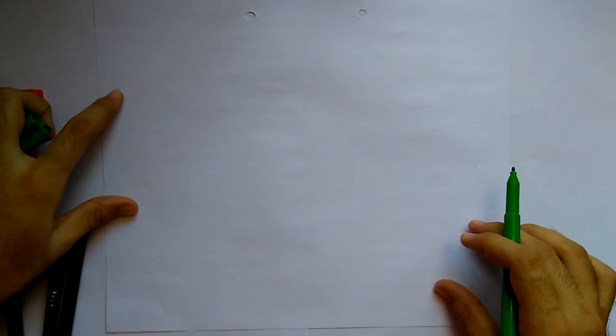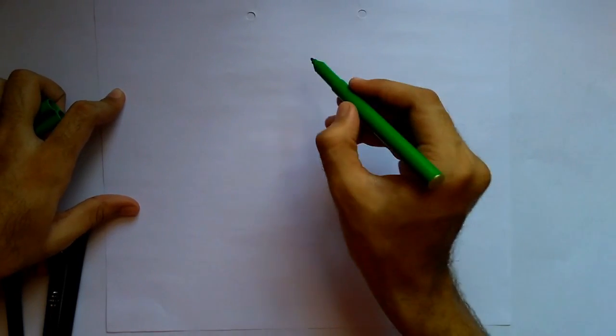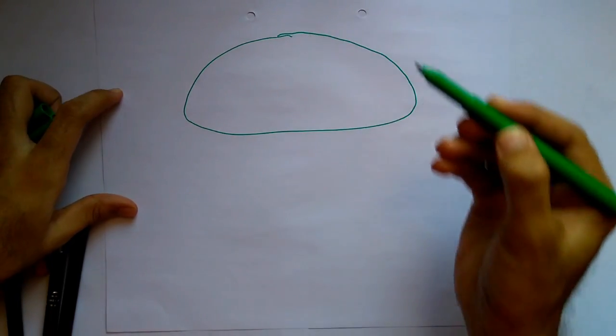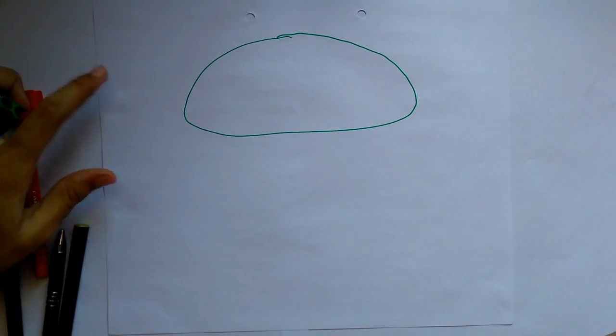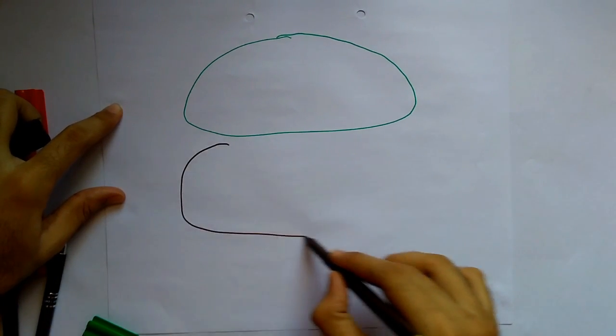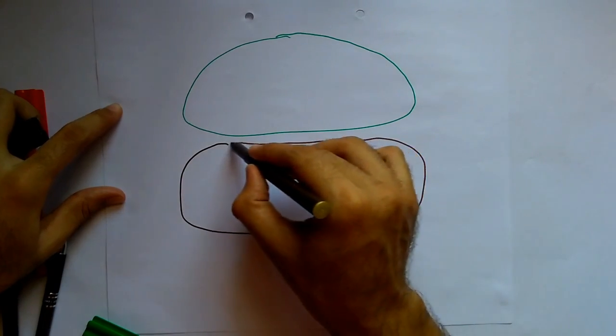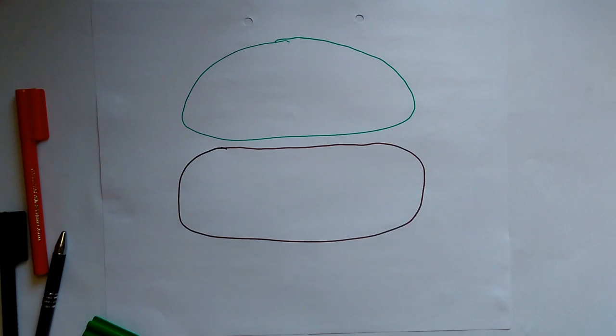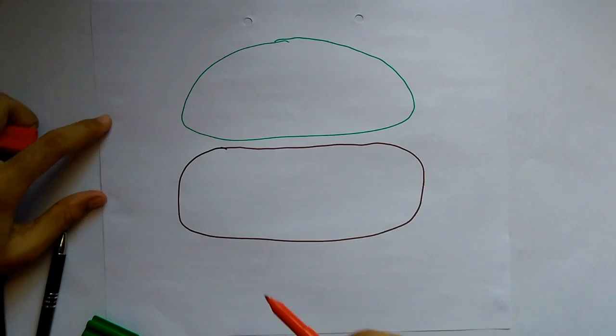Mainly this photorespiration takes place in coordination between three cells, those are: one which we all know is chloroplast, and the second one is peroxisome, and below is mitochondria situated here.